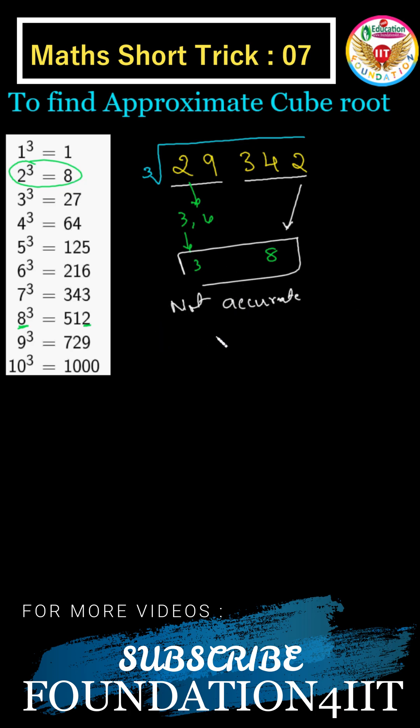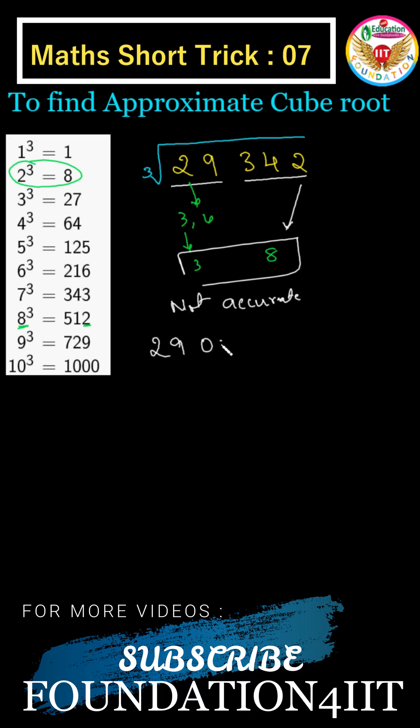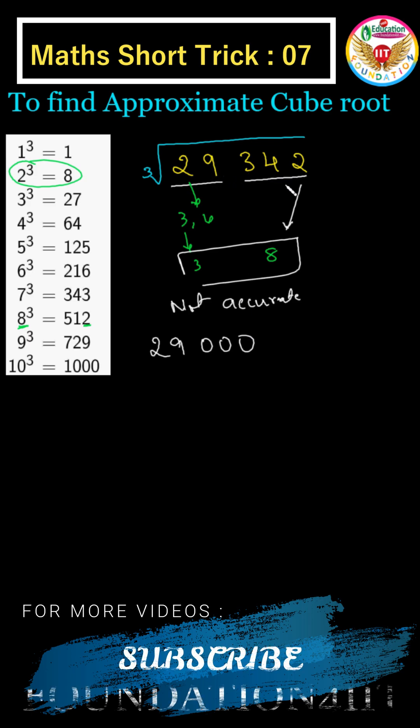For that you can use one more way. You can just take the number 29. Last places you can take nearest approximate value of 29,342 is 29,000.